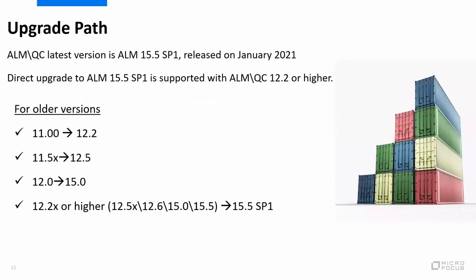When looking at the upgrade path and how you can move from your current version to the latest one, we support a direct upgrade path from ALM Quality Center 12.2 or higher to the latest version. If you are using an older version, you will need to make a stop on the way. For example, if you are using ALM 11, you can upgrade directly to ALM 12.2 and from there to the latest. Users of ALM 11.5 can upgrade directly to 12.5, and those using ALM Quality Center 12.0 can directly upgrade to 15. From these versions, you can directly upgrade to the latest version, which is ALM 15.5 Service Pack 1.